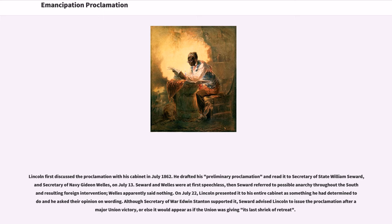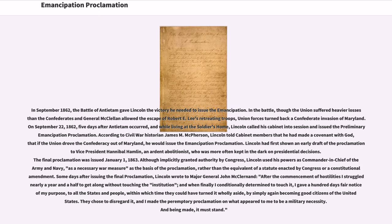Seward and Welles were at first speechless; then Seward referred to possible anarchy throughout the South and resulting foreign intervention. On July 22, Lincoln presented it to his entire cabinet as something he had determined to do when he asked their opinion on wording. Although Secretary of War Edwin Stanton supported it, Seward advised Lincoln to issue the proclamation after a major Union victory, or else it would appear as if the Union was giving its last shriek of retreat. In September 1862, the Battle of Antietam gave Lincoln the victory he needed to issue the emancipation.